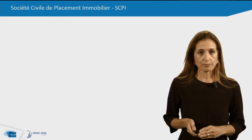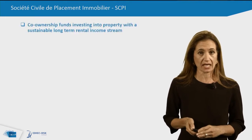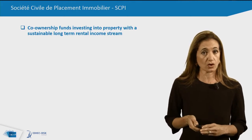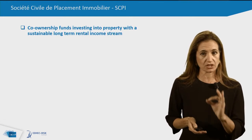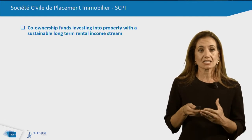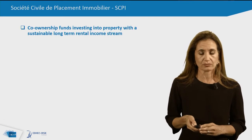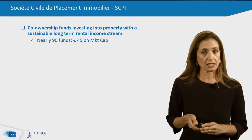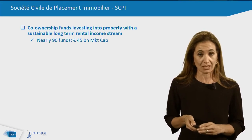Our sample is made of unlisted vehicles called SCPI. These are unlisted vehicles with very specific objectives: to provide sustainable rental income streams over a long-term horizon. As of today, the market is made of nearly 90 funds, with a property market value cap of 45 billion euro.